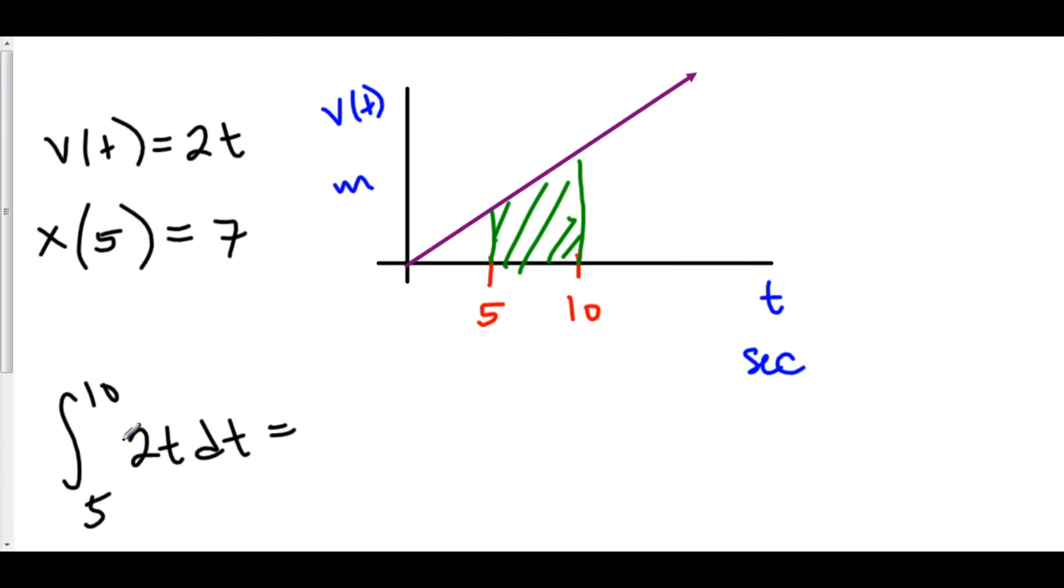The antiderivative of 2t is t squared, and this is from 5 to 10. Using the fundamental theorem of calculus part 2, we can plug in our b, 10 squared is 100, minus we'll plug in our a, 5 squared is 25.